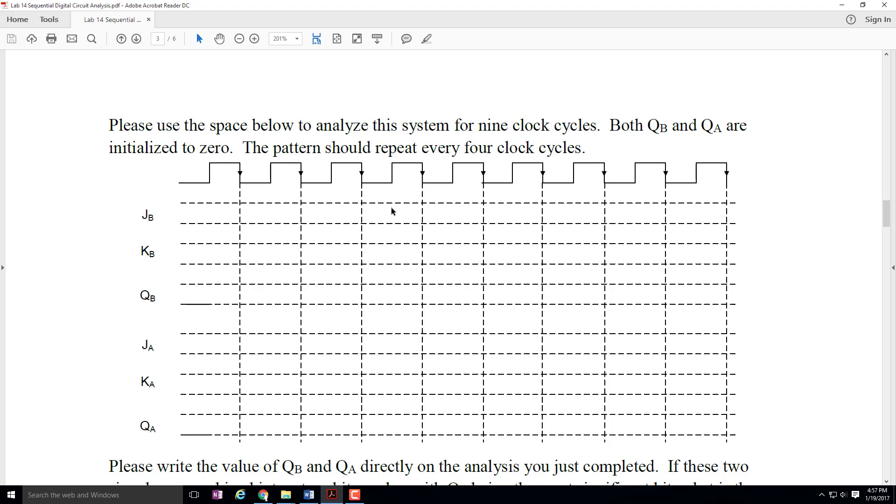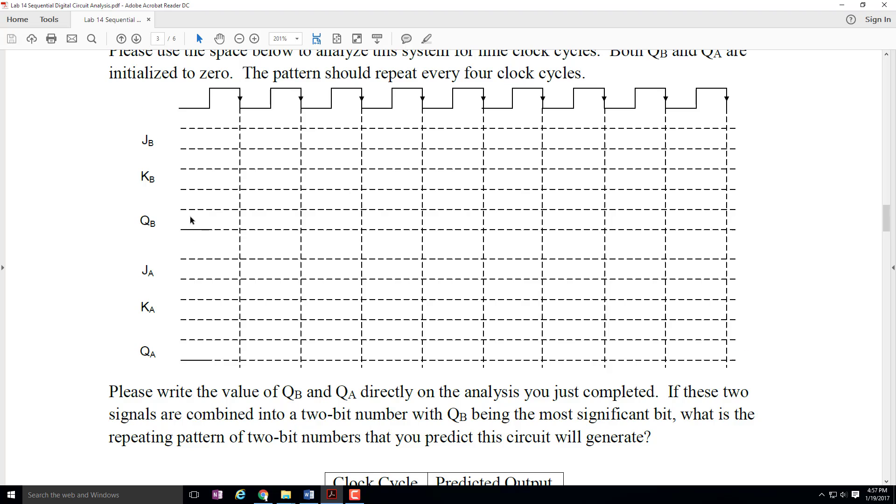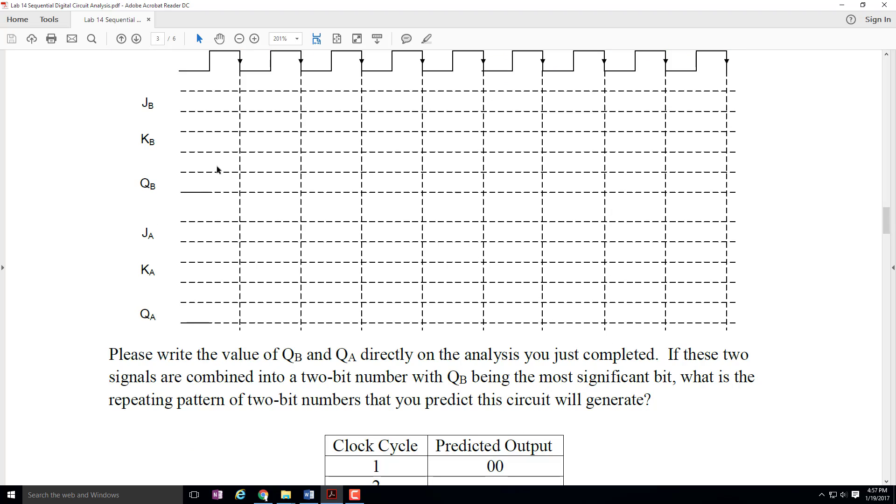Just as you did in the example problems and in the in-class exercise for this material, you will be generating the J signals, the K signals, and the Q signals for each one of these. That will allow you to determine what is going to be the pattern of ones and zeros that go through. I ask you down here to please write the values of Q sub B and Q sub A directly on the analysis you just completed.